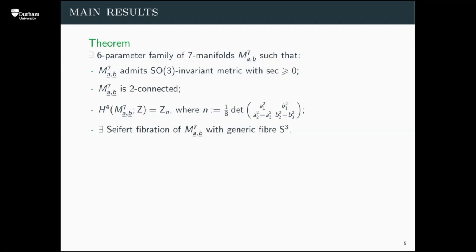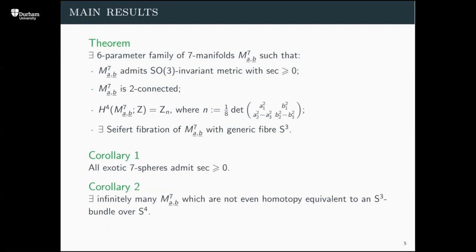These manifolds really do look very similar to S³ bundles over S⁴. This family is actually much larger than that subfamily: first, the family contains all exotic seven-spheres, including the non-Milnor spheres that cannot be written as S³ bundles over S⁴. Second, there are infinitely many members of this family which are not even homotopy equivalent to S³ bundles over S⁴. These are the first examples of 2-connected seven manifolds with non-negative curvature which are not homotopy equivalent to S³ bundles over S⁴.